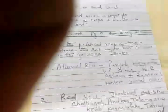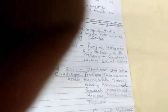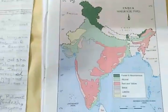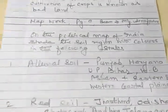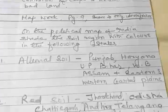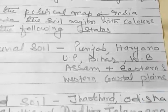Then the map question is there, which is on page 9 of your book. I am giving you certain hints. You can shade the region of the various types of soil from page number 9 by referring to these states — you need not mark the states, only refer to them. Alluvial soil: Punjab, Haryana, UP, Bihar, West Bengal, Assam, and the Eastern and Western Coastal Plains.